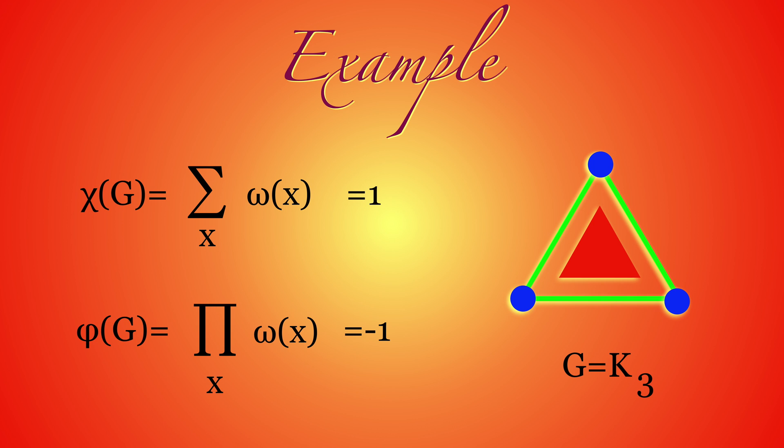For the triangle G, the complete graph with three vertices, there are seven simplicies in the Whitney complex. There are three vertices, three edges, and one two-dimensional simplex. The Fermi characteristic is minus one, as there is an odd number of odd dimensions. The Euler characteristic is v minus e plus f, which is three minus three plus one, equals one.